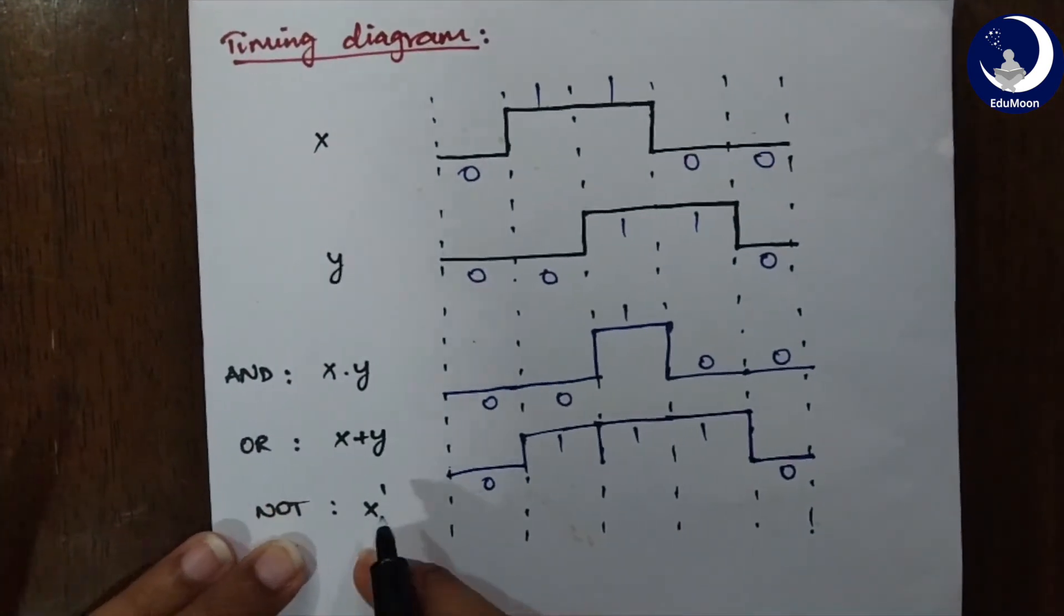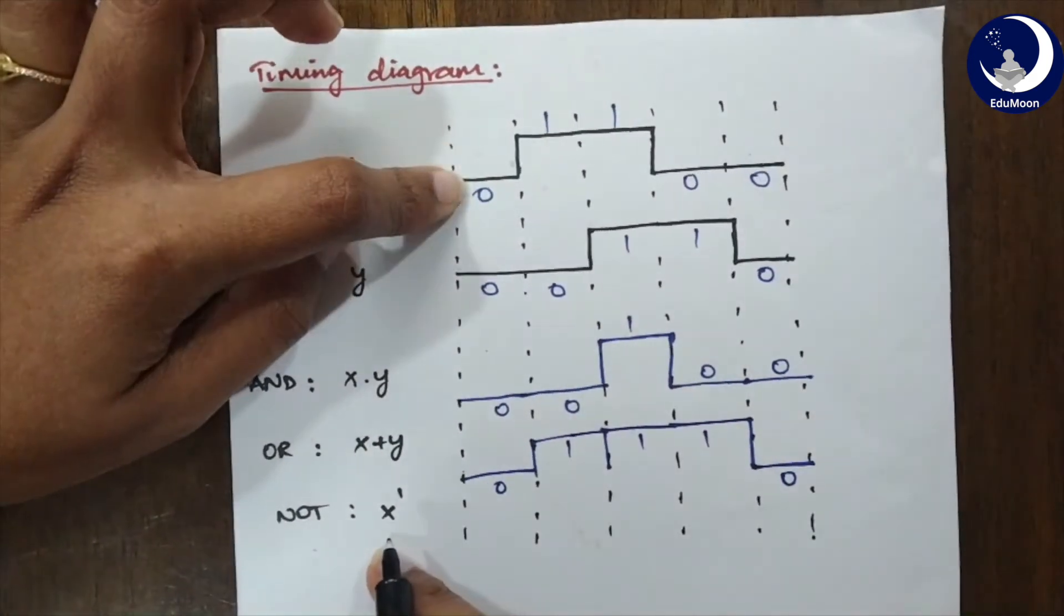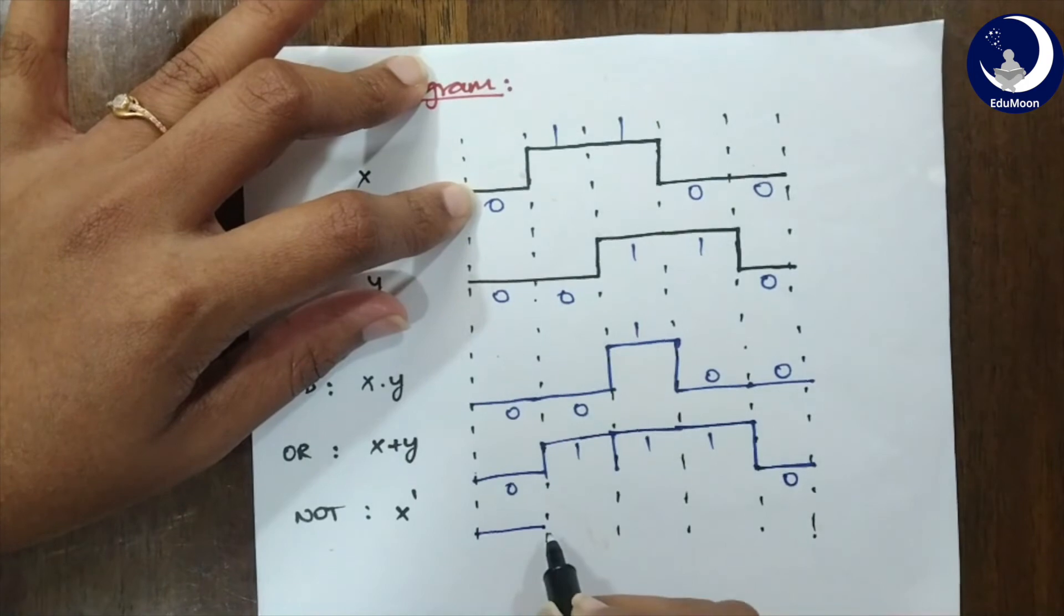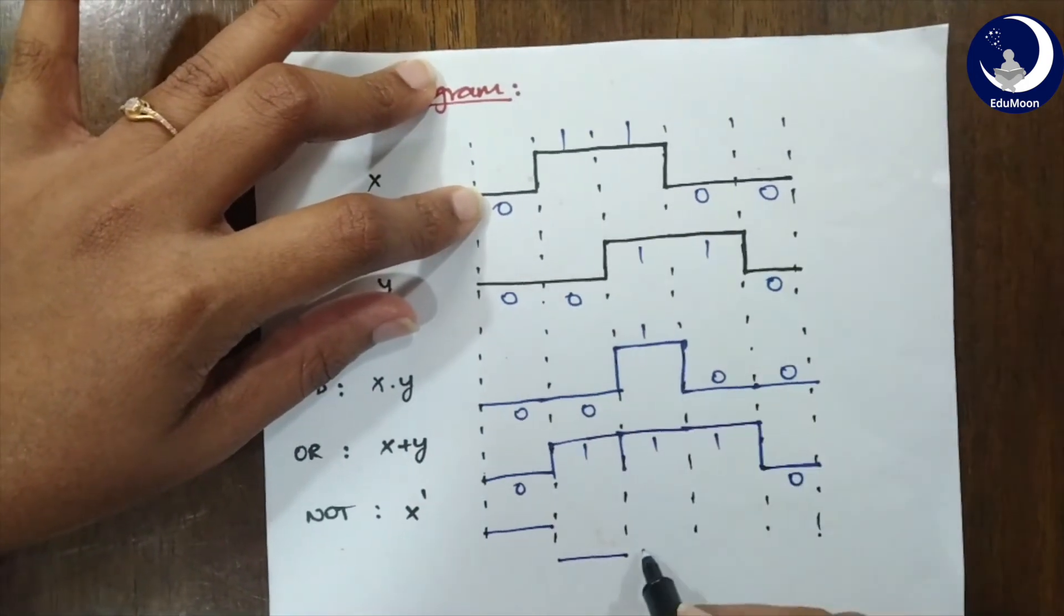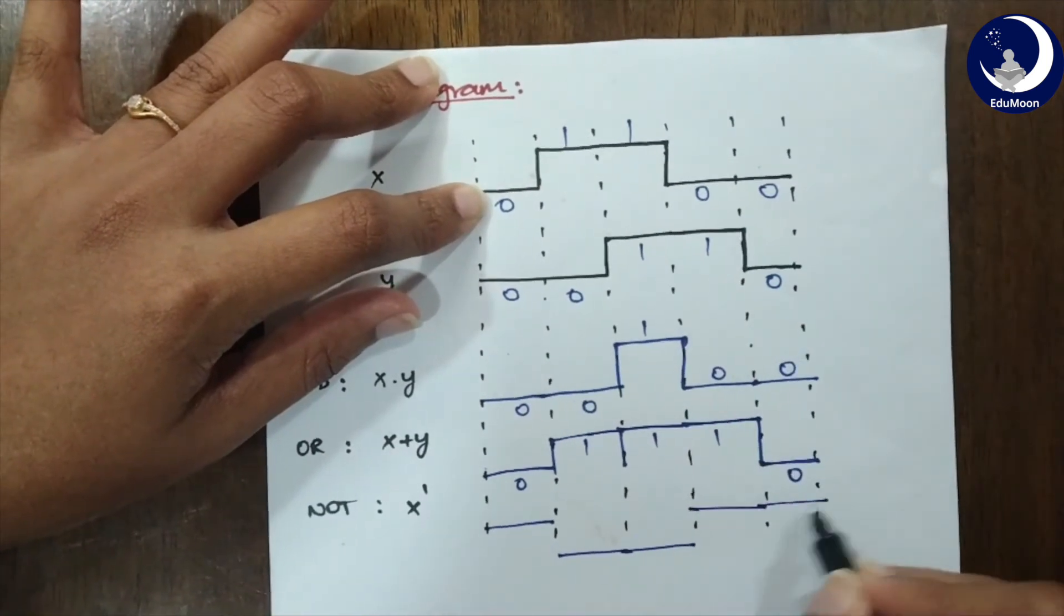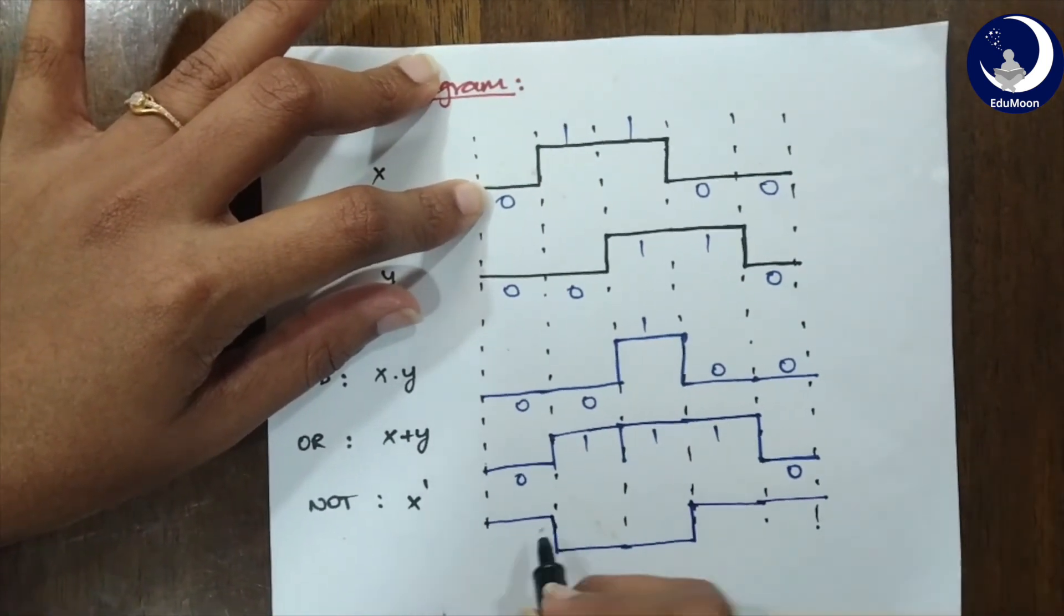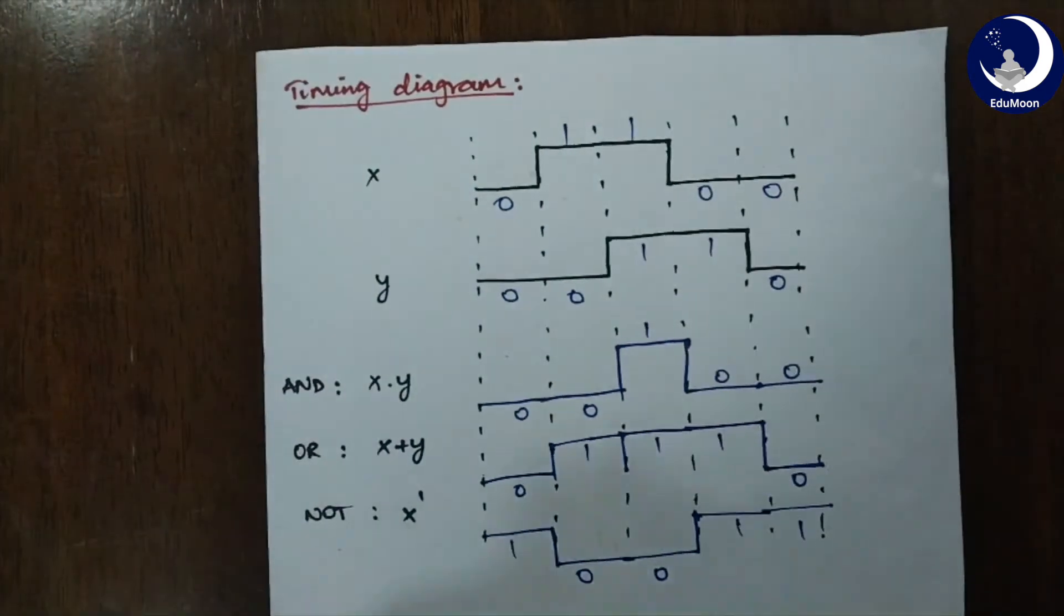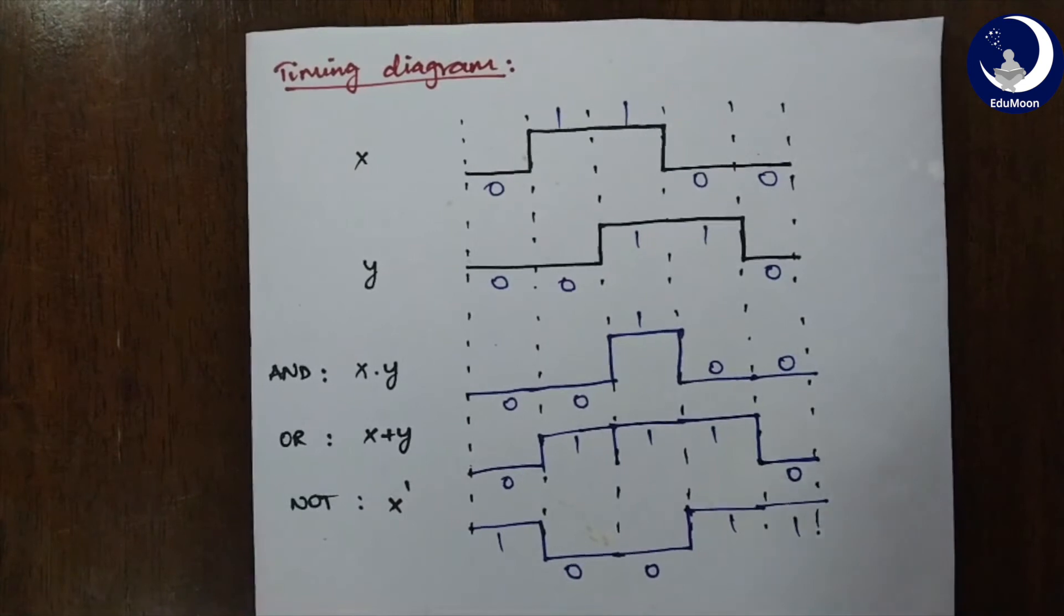Now, let's try finding the NOT for the given X. For 0, the inverted form of 0 will be 1 which is in the highest state. So, for 1 it is 0 and again for 1 it is 0. For 0 it is 1. For again 0 it is 1. So, just connect this. This is 1, this is 0, this is 0, this is 0 and this is 1 and this is 1. So, now finally we are done with the timing diagrams also.